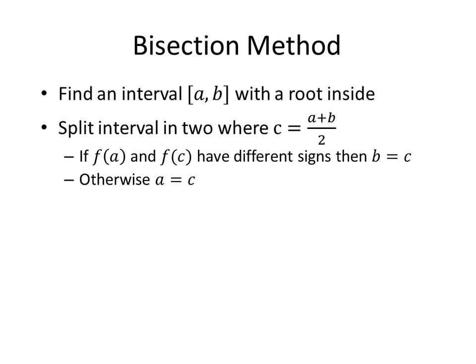So here's how bisection works. You first find some interval that contains your root using points A and B. Then you're going to split the interval in two right down the middle with the point C. Now if your function changes signs between A and C, then you'll pick that interval, or if it changes signs between B and C, you'll pick that interval.